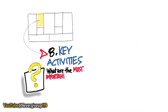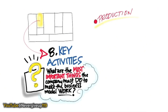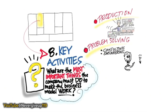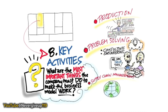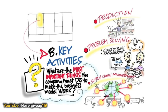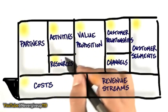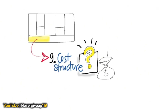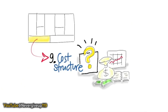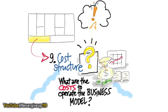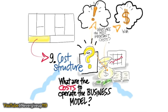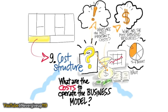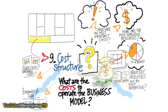Next are key activities — the most important things you need to do for the business model to work. Are you in the production business, making something? Or in the problem-solving business, like consulting or engineering? Or managing supply chains? What are the key activities you need to become expert at? And finally, all of this adds up on the left-hand side to cost. What are the costs and expenses to operate the business model? It's not just the obvious ones like people, buildings, or materials. What are the most important costs, the most expensive resources, the most expensive key activities? And you want to ask the typical accounting questions: what are fixed costs, variable costs, are there economies of scale? You need a good handle on what it will cost to run your business.